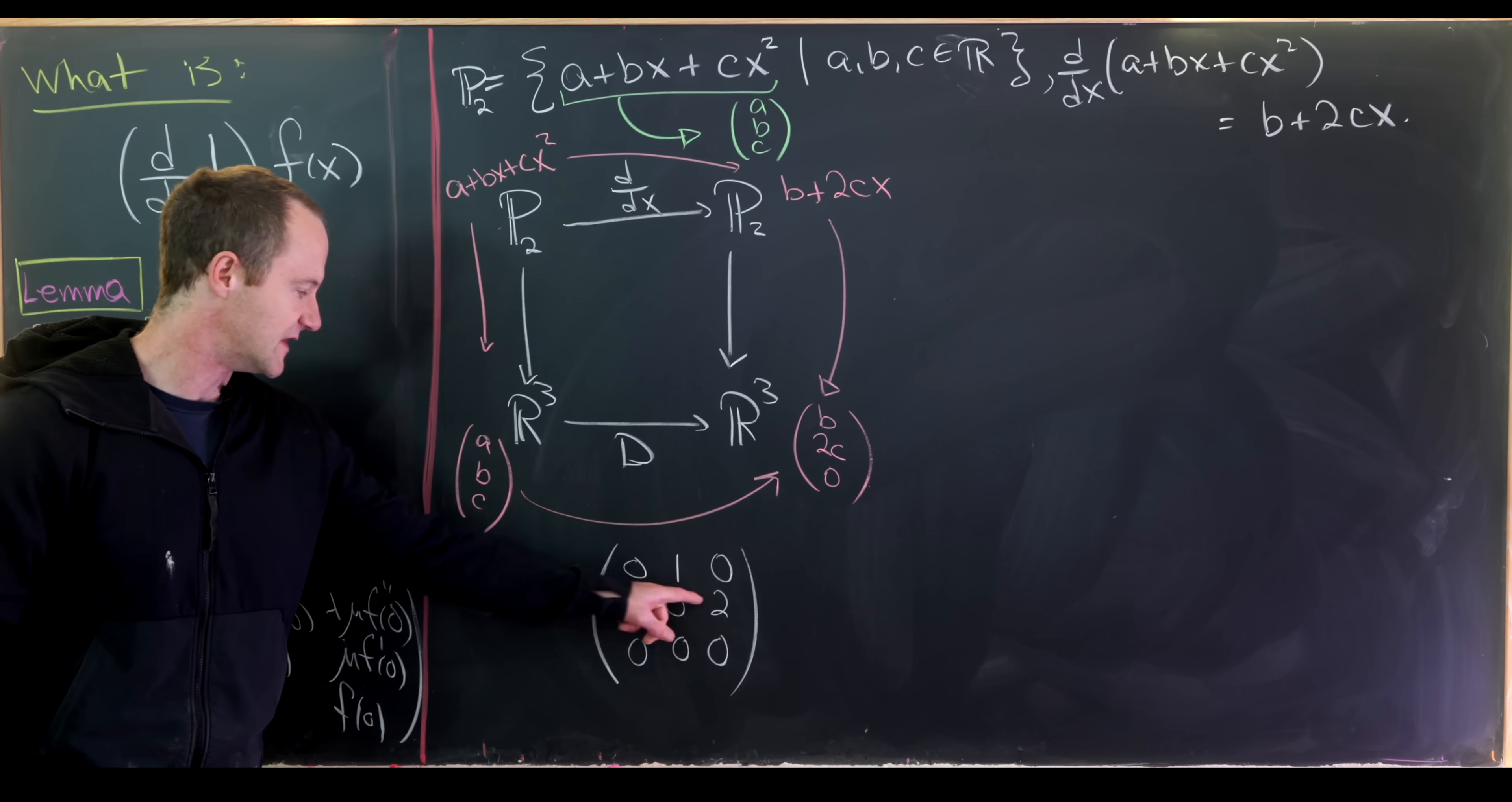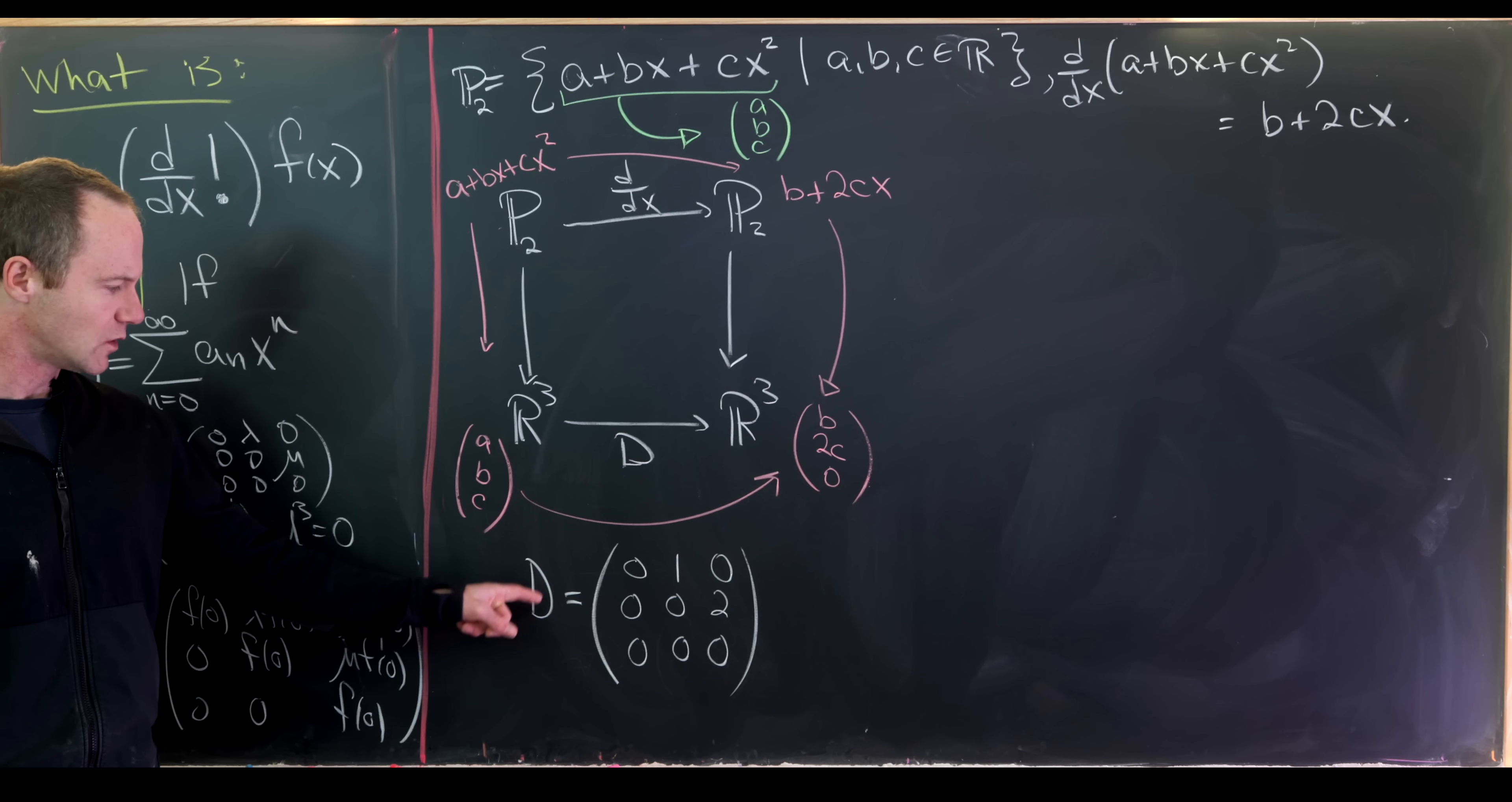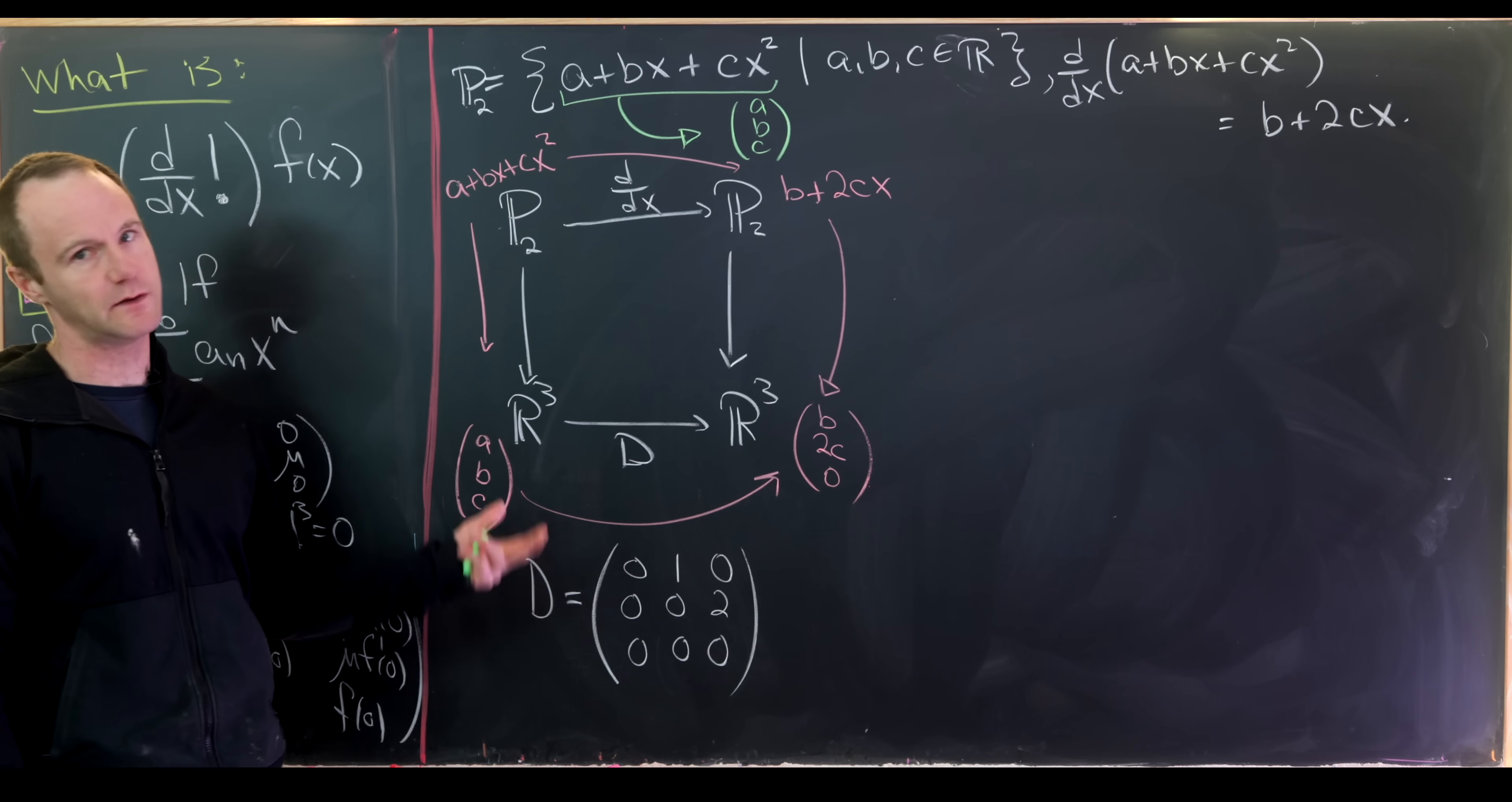So notice if we were to multiply this matrix into this vector a, b, c, we would most definitely achieve this vector b, 2c, 0. So this D matrix is doing the same as this derivative just in kind of this R³ world instead of this P² world. And now our goal is to find the factorial of this D matrix. But finding the factorial of this is a little bit more difficult because it's not diagonal. In fact it's not even diagonalizable. You can check that this only has a single eigenvector, and that eigenvector has an eigenvalue of 0, and that eigenvector has geometric multiplicity of 1 meaning that it's not diagonalizable.